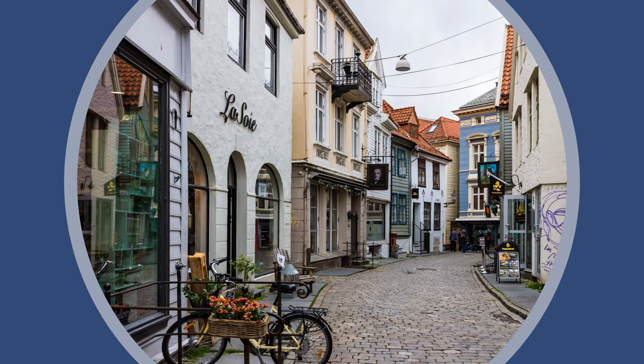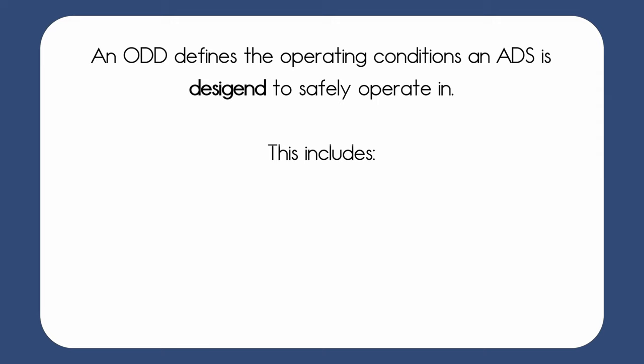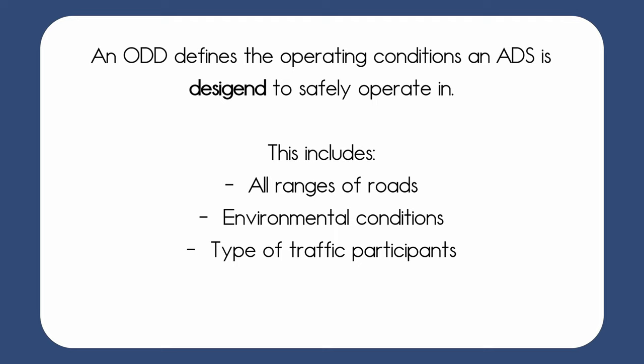So what does an ODD describe? An ODD defines the operating conditions an ADS is designed to safely operate in. This includes all ranges of roads, environmental conditions, type of traffic participants, and weather and time of day restrictions.